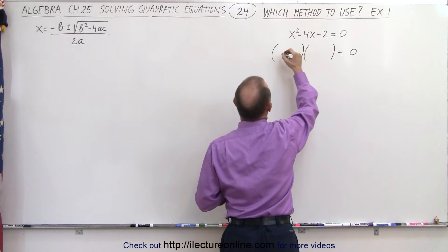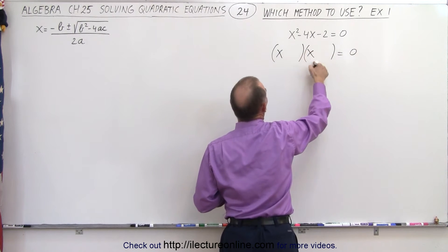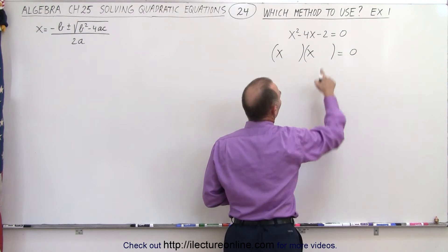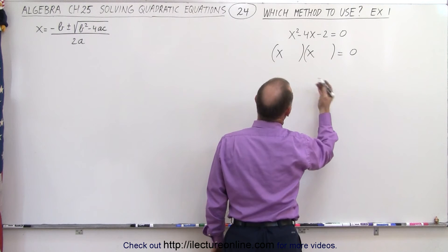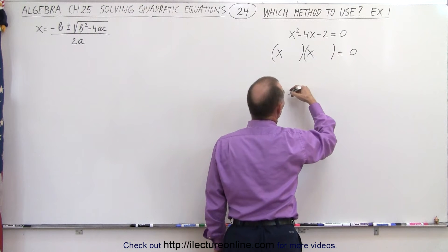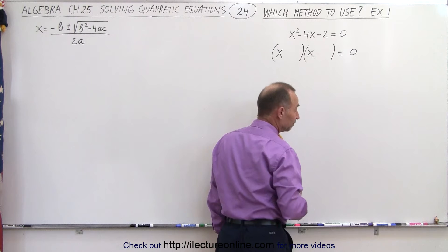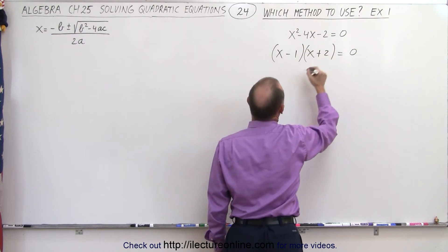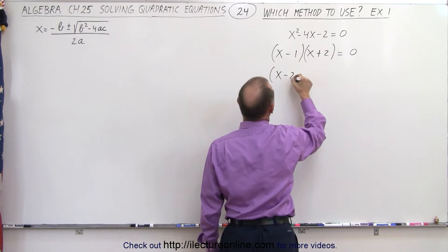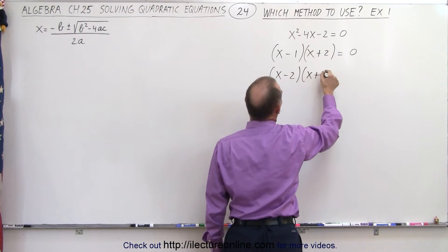On the left side here, we need an x and an x because x times x gives us x squared. On the right side, we have a negative two. We can only get a negative two by having a positive one and a negative two or a negative two and a positive one. So how about a negative one and a positive two or it could be x minus two times x plus one.